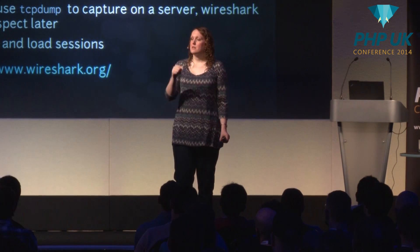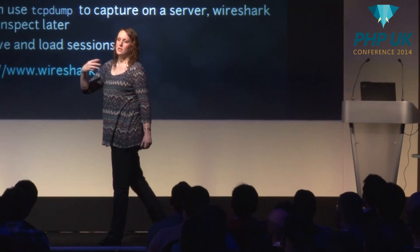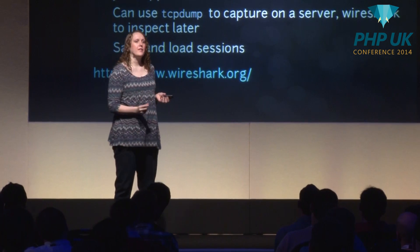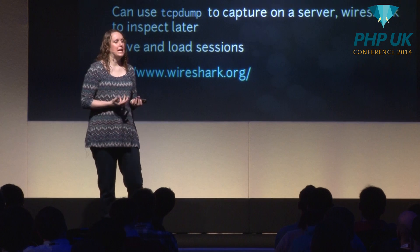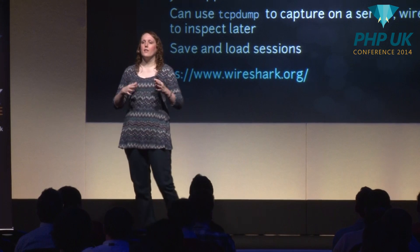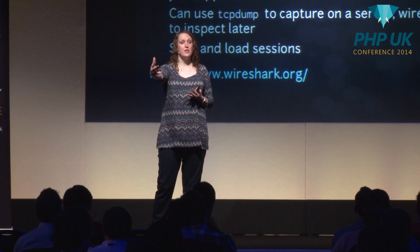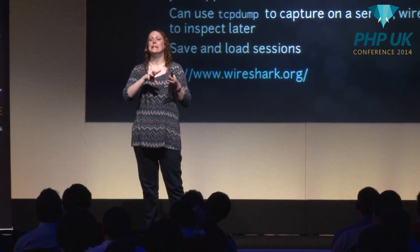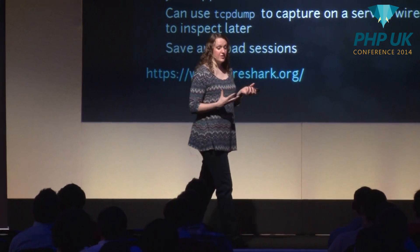If you have a problem, you can reproduce the problem, start Wireshark, get the problem, have a look at what happened. If you need to capture traffic not on the same machine as Wireshark, you can capture it with TCP dump — which does the same thing — and examine it later with Wireshark. You can also capture it locally, save it, show it to somebody else, or look at it again. It doesn't have to be live capture.